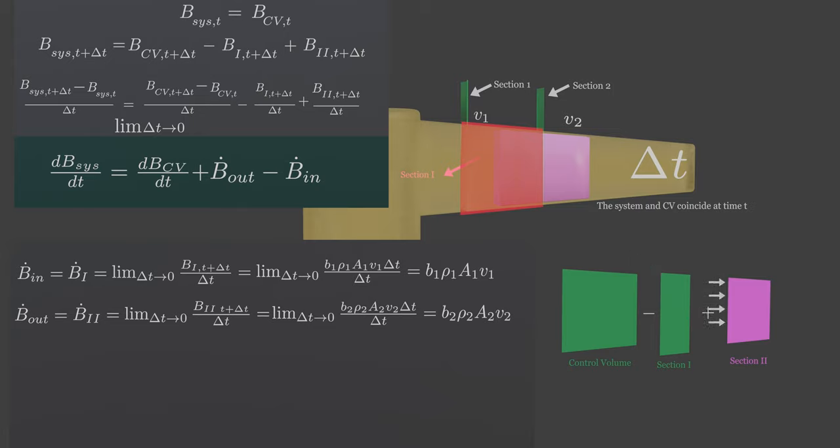The same goes for section 2 which leaves the control surface, but section II is not part of control volume, instead it is part of system. Also, velocities V1 and V2 are uniform on those volumetric section I and section II.